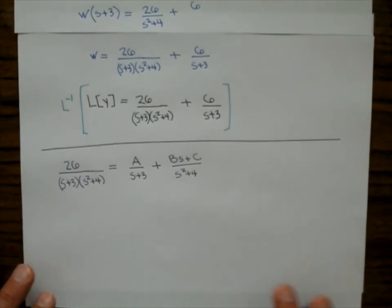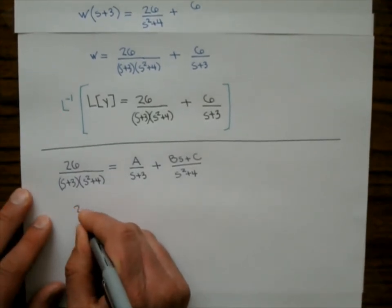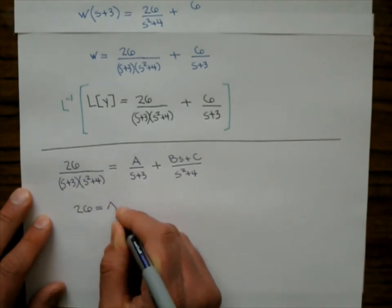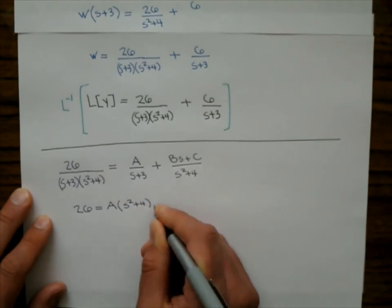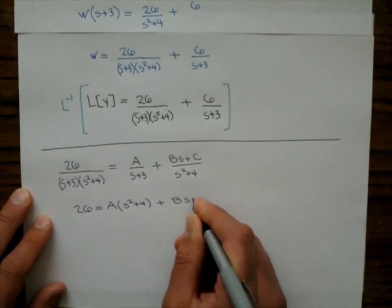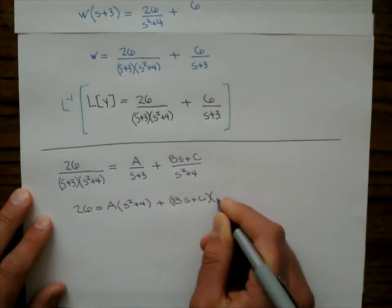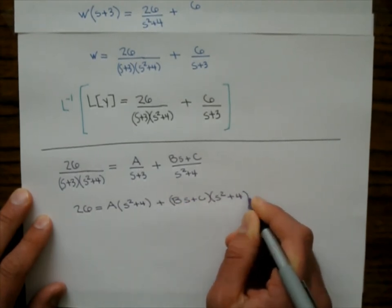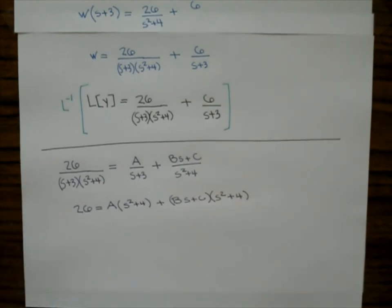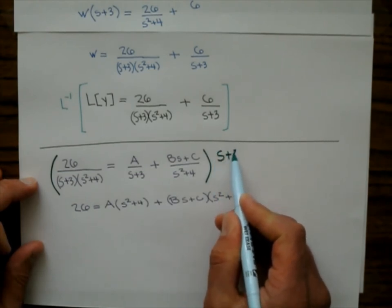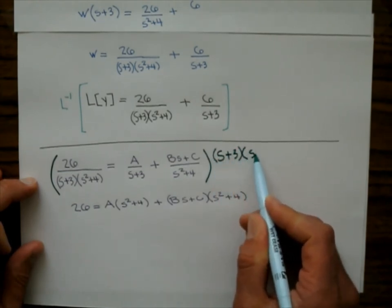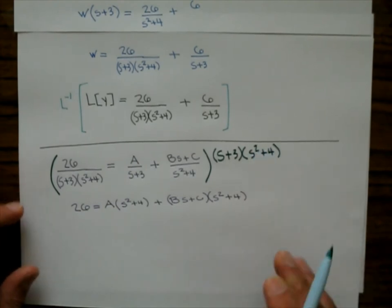I'm going to multiply by the LCD, which is (s + 3)(s squared + 4), to get: 26 equals A(s squared + 4) plus (Bs + C)(s + 3). I multiplied this equation by the LCD (s + 3)(s squared + 4).